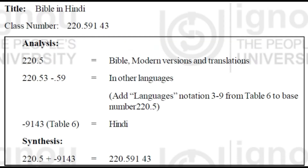Now I will show how to use Table 6, which is for languages. For example, a book on the Bible in a particular language: from the schedules, 220.5 is Bible modern versions and translations. Instructions say to add language notations from Table 6 to the base number 220.5. From Table 6, 9143 represents that language, so add this number to the main number 220.5. The final number will be 220.5 followed by 9143.